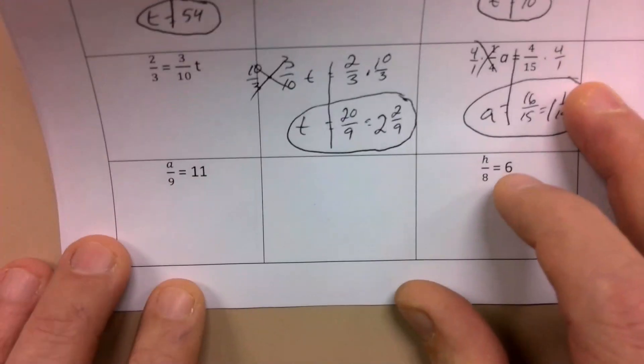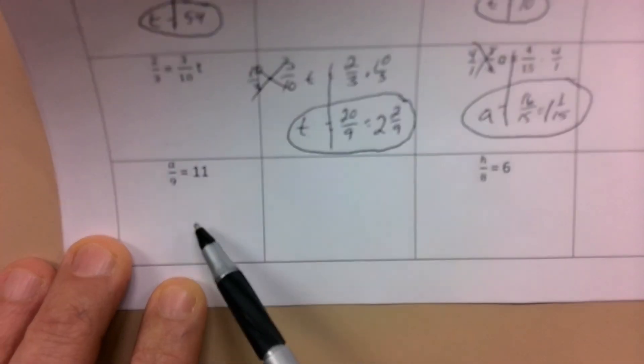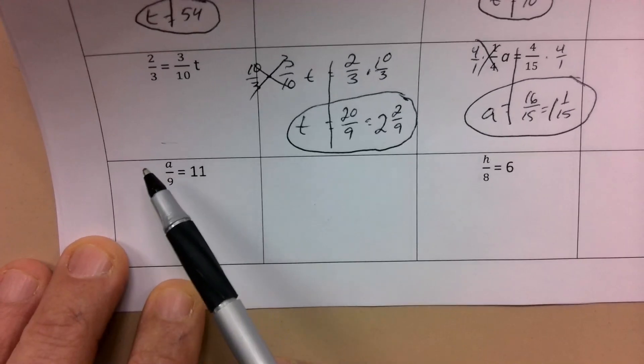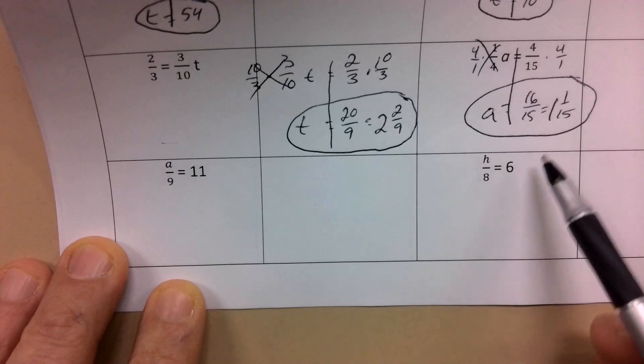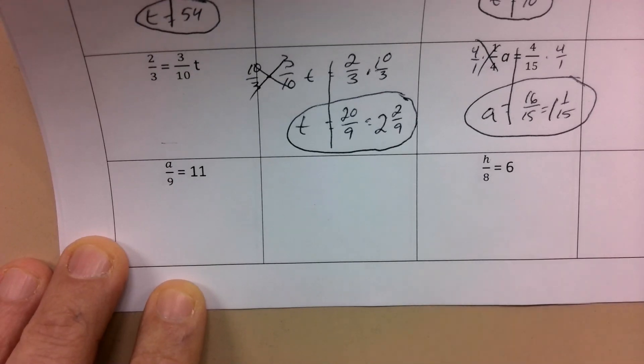I'm not going to do these last two. I mean, you could think of it as one ninth, but really, you've done these before. Right? This is just multiplying both sides by nine. It's going to get you nine nine. You're going to multiply both sides by eight on this one to cancel out the dividing by eight. You're going to get H is equal to 48. So I'm going to leave those two. Deal with the fractions. Use those reciprocals. All right. Have a great day. Bye.